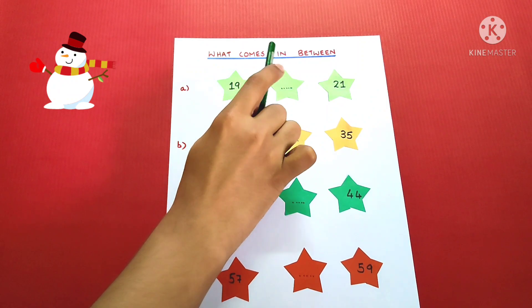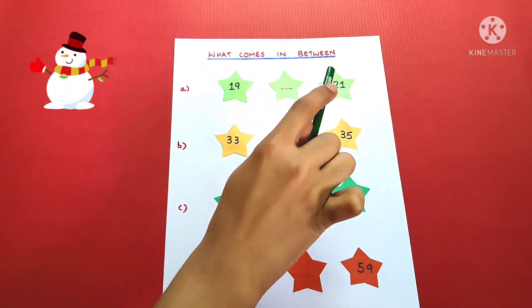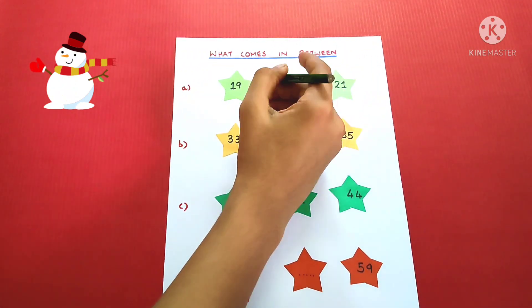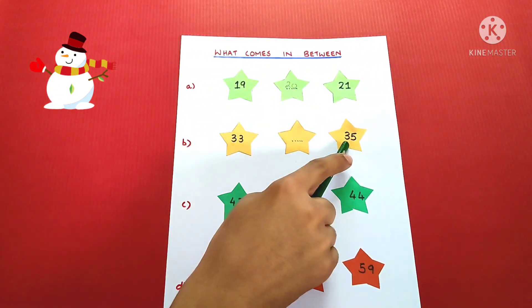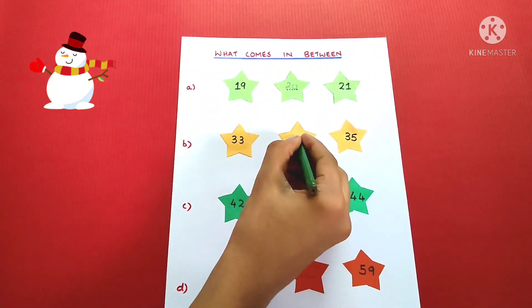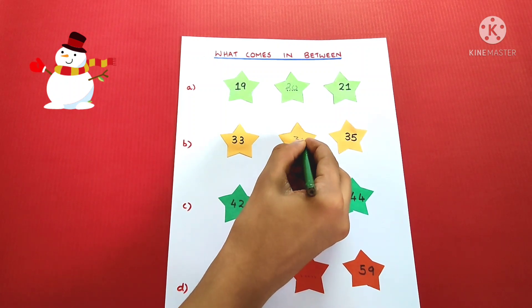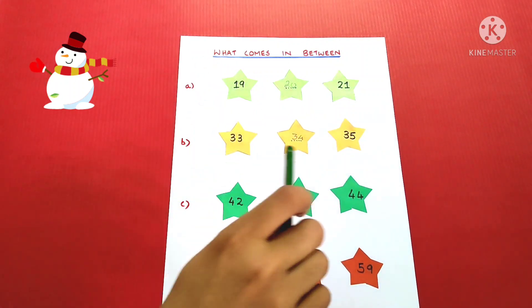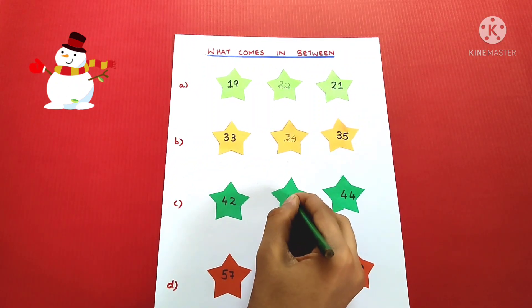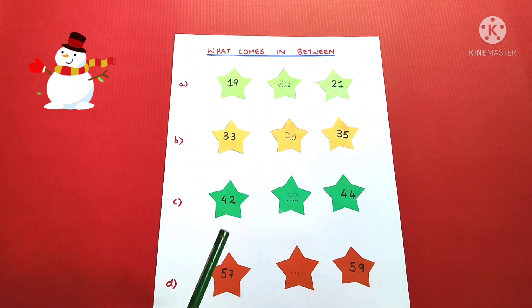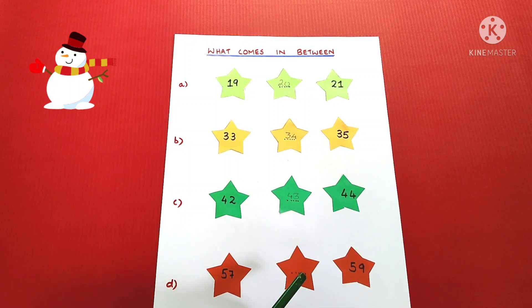What comes in between 19, 21? 20. 33, 35? 34. 42, 44? 43. 57, 59? 58.